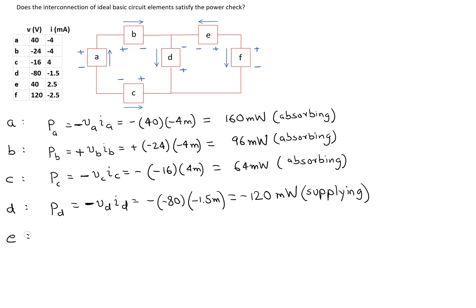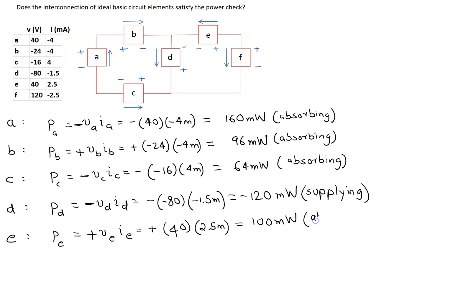Looking at element E, the power is given by voltage times current. For element E, the reference current is entering the terminal marked plus. So we use the power formula with a plus sign. Substituting the values: 40 and 2.5 milliamps. This simplifies to 100 milliwatts. As this final answer is a positive value, this means element E is also absorbing power.